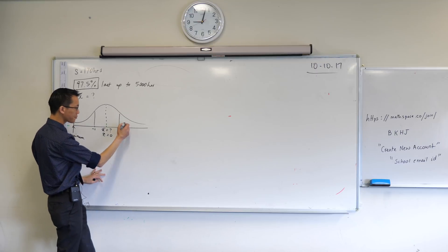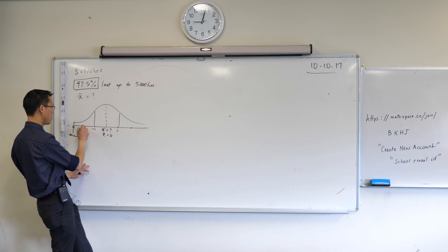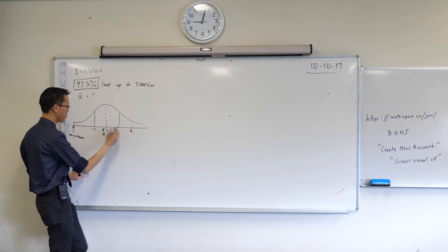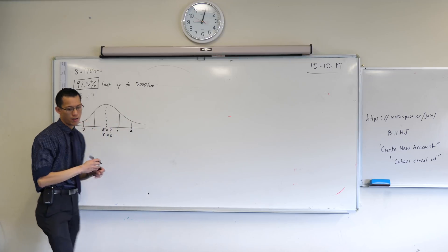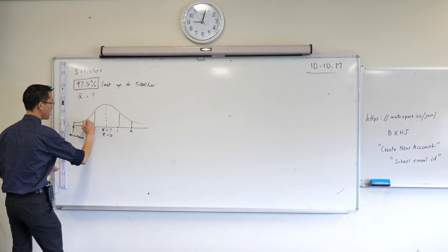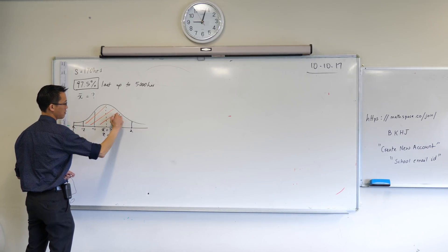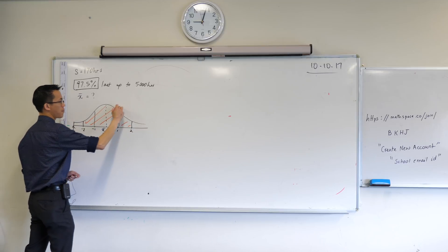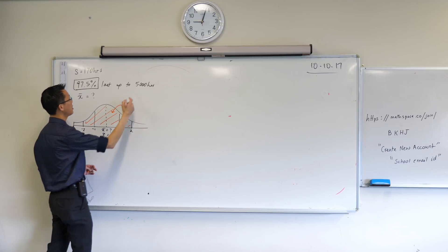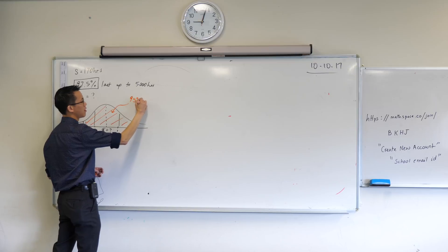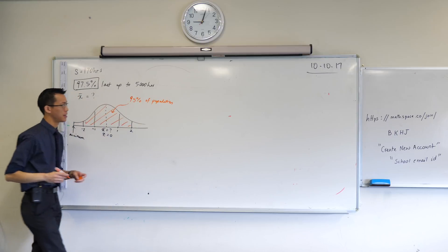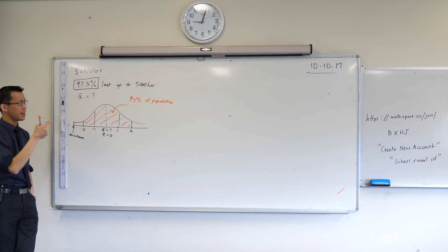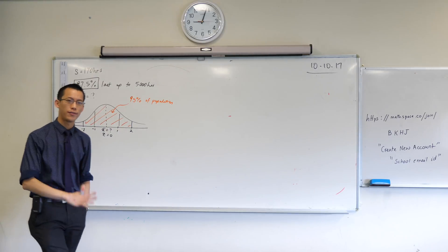If I go two standard deviations away, then the formula and data sheet tells me that this space in here—now I am going to need another color—this space in here represents approximately 95% of the population, or of the light globes. Now, 95% still isn't our 97.5%, but you know that you can't go any further.